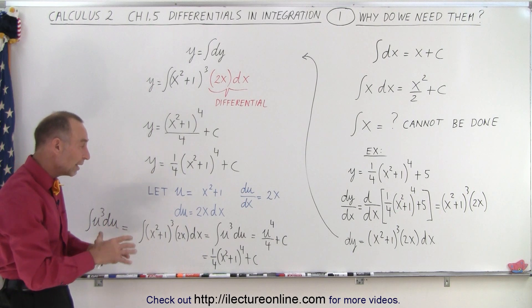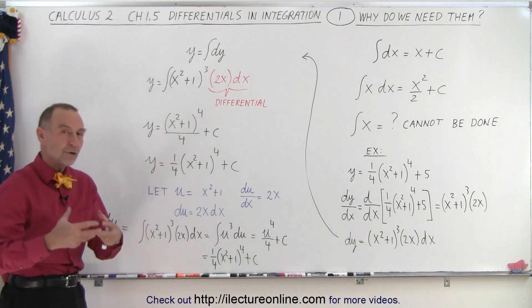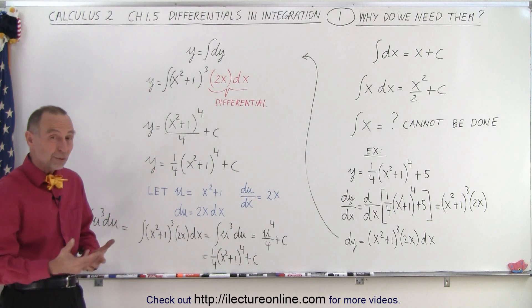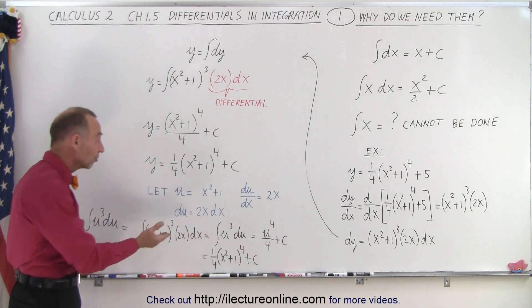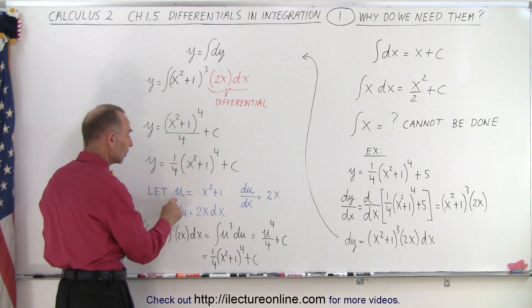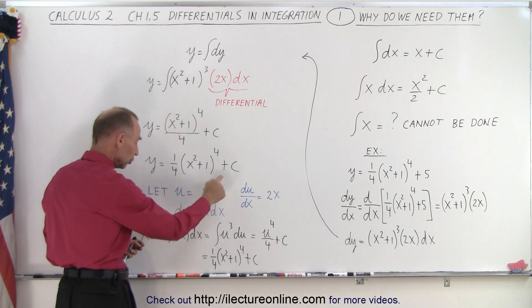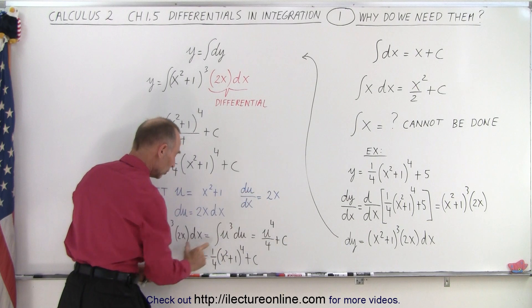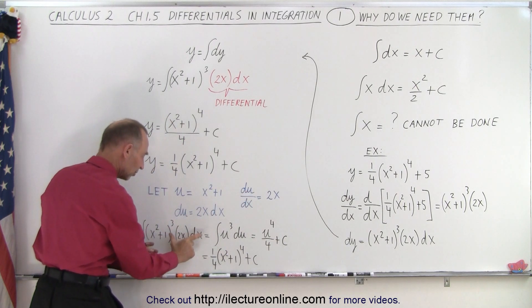So there you see that whenever you integrate something, you must have the proper differential. And there's different ways in which we can figure out what that is. We can use the substitution method to find the proper differential. So that way we know that if we're going to integrate u cubed, which is x squared plus 1 cubed, like we do over here, we have to have a proper du, which in this case is 2x dx, which has to be there.